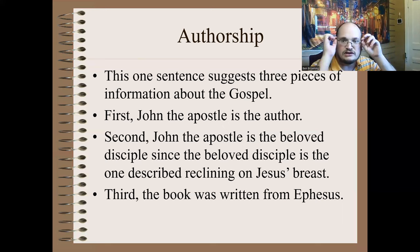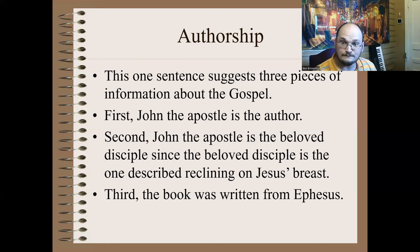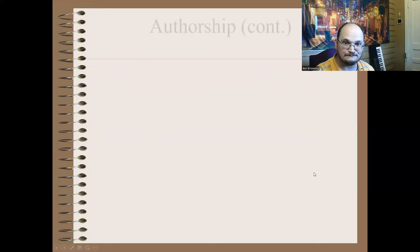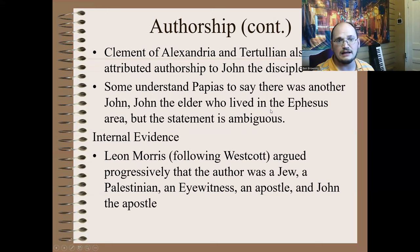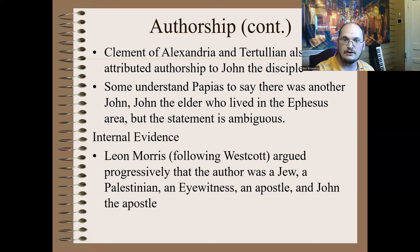The Ephesus connection is interesting — when we look at Revelation, the churches written to are in that same region, and tradition places John around there generally. Beyond Polycarp's chain, we also have Clement of Alexandria writing in the late second century, and Tertullian writing in the late second to early third century from Carthage in North Africa — both attributing authorship to John the Disciple, writing from different locations.